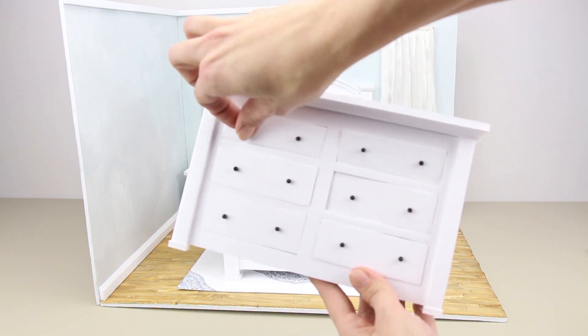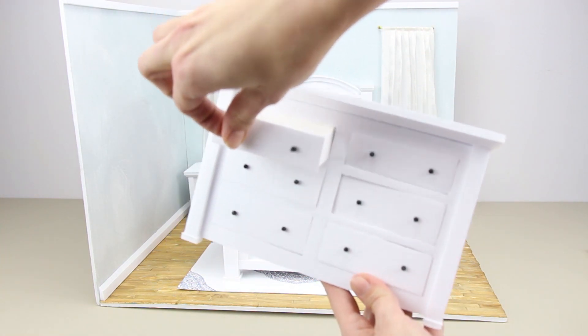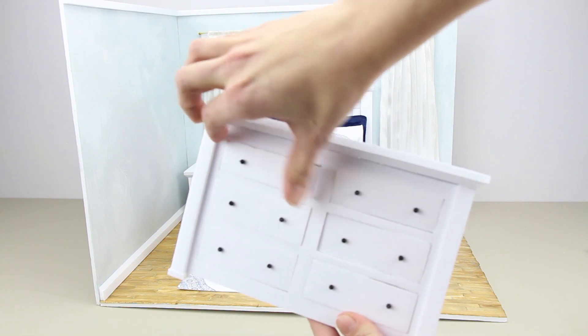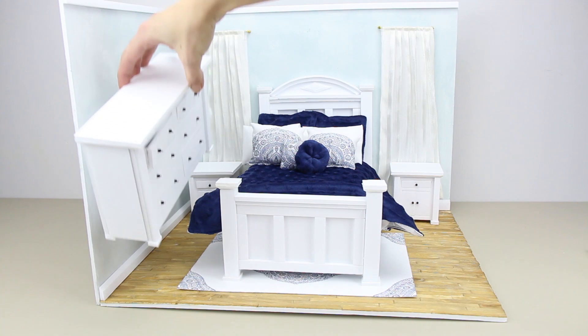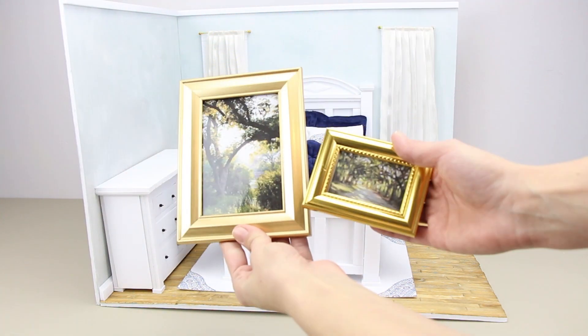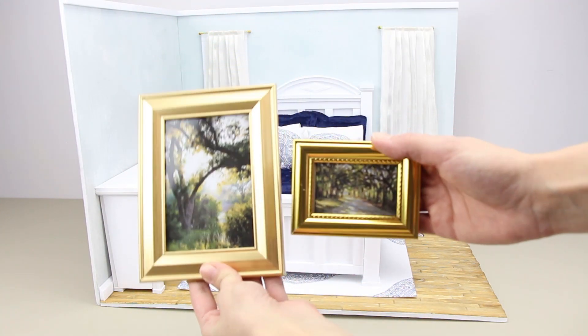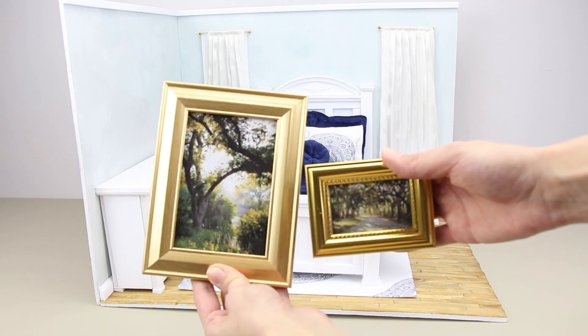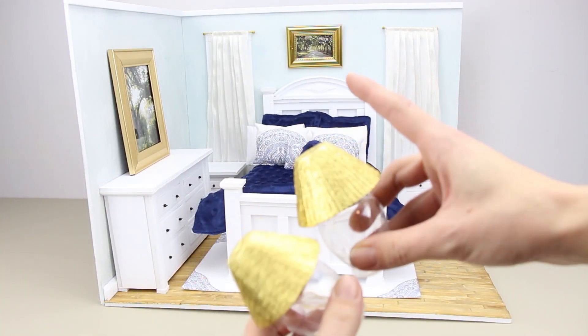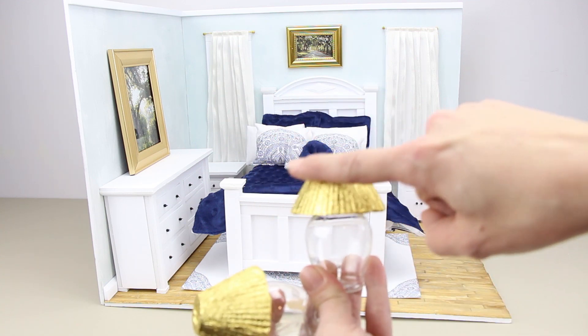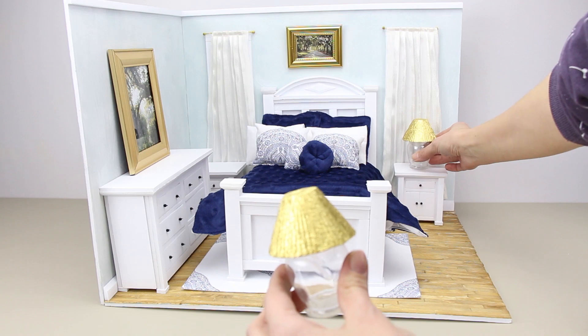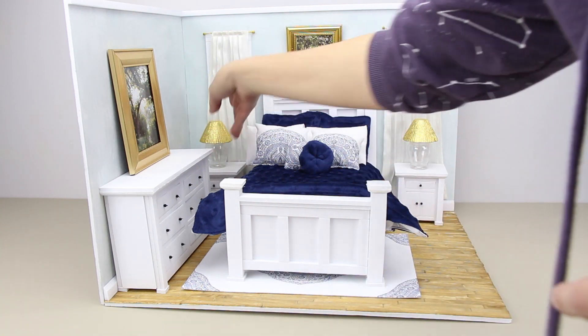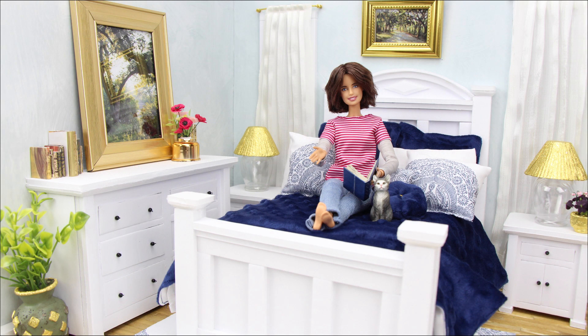I also included a pattern for the dresser. Use the same instructions from the bed stand to make the dresser. I also got two miniature frames at the dollar store and added prints from a magazine. I got two air fresheners that look like lamps from the dollar store a few years ago. I cleaned them out and covered the shades with gold foil. To finish off the room, add extras like plants and books.